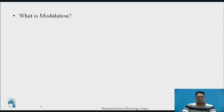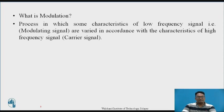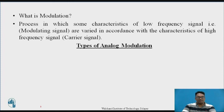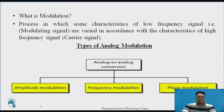So basically, what is modulation? It is a process in which some characteristics of a low frequency signal — that is, the modulating signal, also known as the main information signal — are varied in accordance with the characteristics of a high frequency signal, which is known as the carrier signal. The characteristics generally deal with the amplitude, frequency, and phase of the modulating signal. There are three types of analog modulation: amplitude modulation, frequency modulation, and phase modulation.